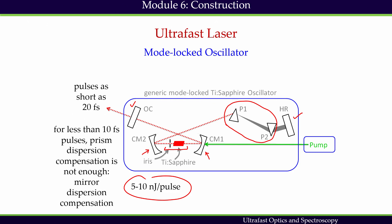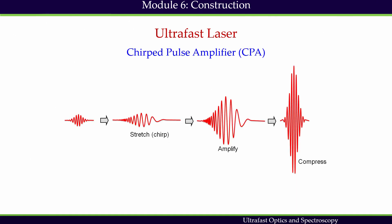This kind of ultrafast oscillator can produce energy in the range of 5 to 10 nanojoules per pulse. Now, the question is: if we need more energy, what do we do? Definitely we have to amplify the pulse. Due to this high peak intensity, ultrafast pulses cause local heating at the bulk or surface of the gain medium resulting in thermal fracture, decomposition, and melting of the gain medium.